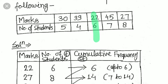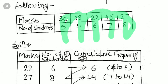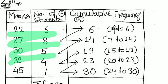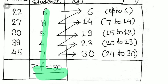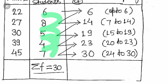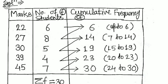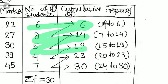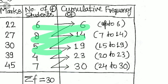Arranging in ascending order: 22 (frequency 6), 27 (frequency 8), 30 (frequency 5), 39 (frequency 4), 45 (frequency 7). The sum of all frequencies is 30. The cumulative frequencies are: 6, 14, 19, 23, 30 — calculated by adding each frequency to the previous cumulative total.